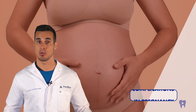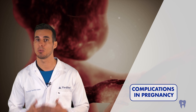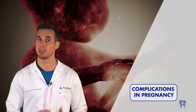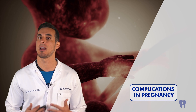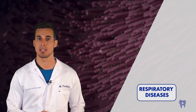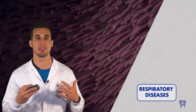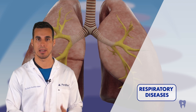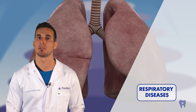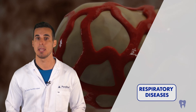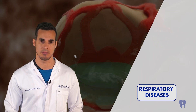Gum disease during pregnancy has been associated with premature births and low birth weight babies. Oral bacteria and the resulting toxins can enter the bloodstream and affect the fetus. There is evidence to suggest that bacteria from an infected mouth can be aspirated into the lungs, contributing to respiratory infections such as pneumonia, especially in people with weakened immune systems.